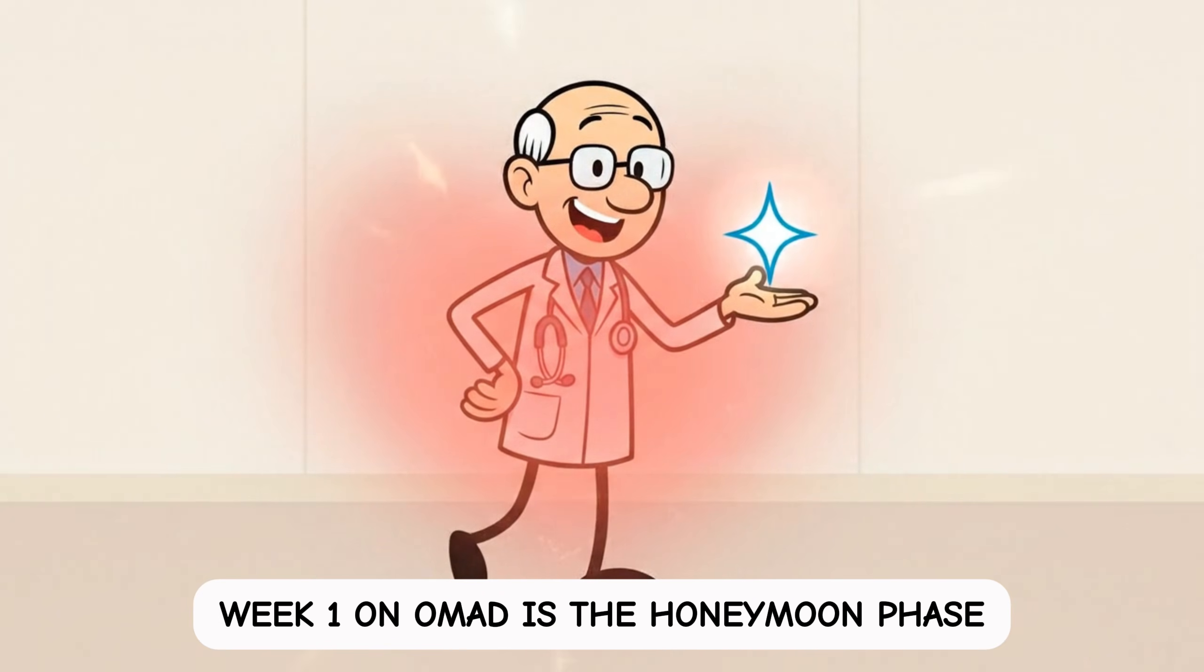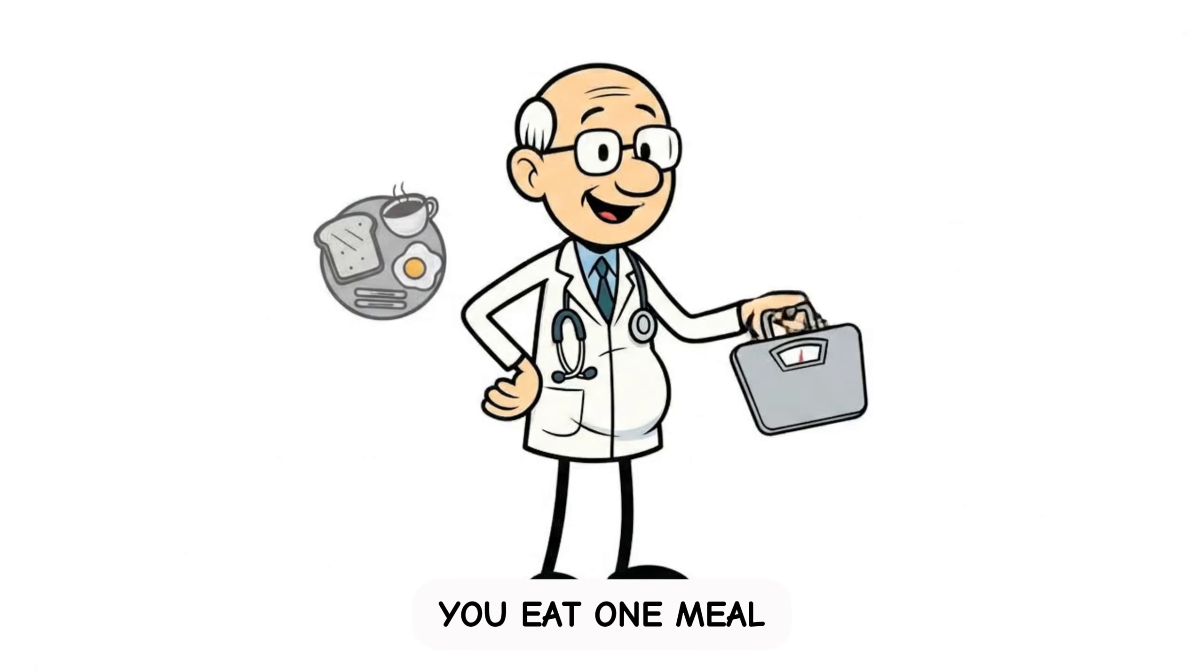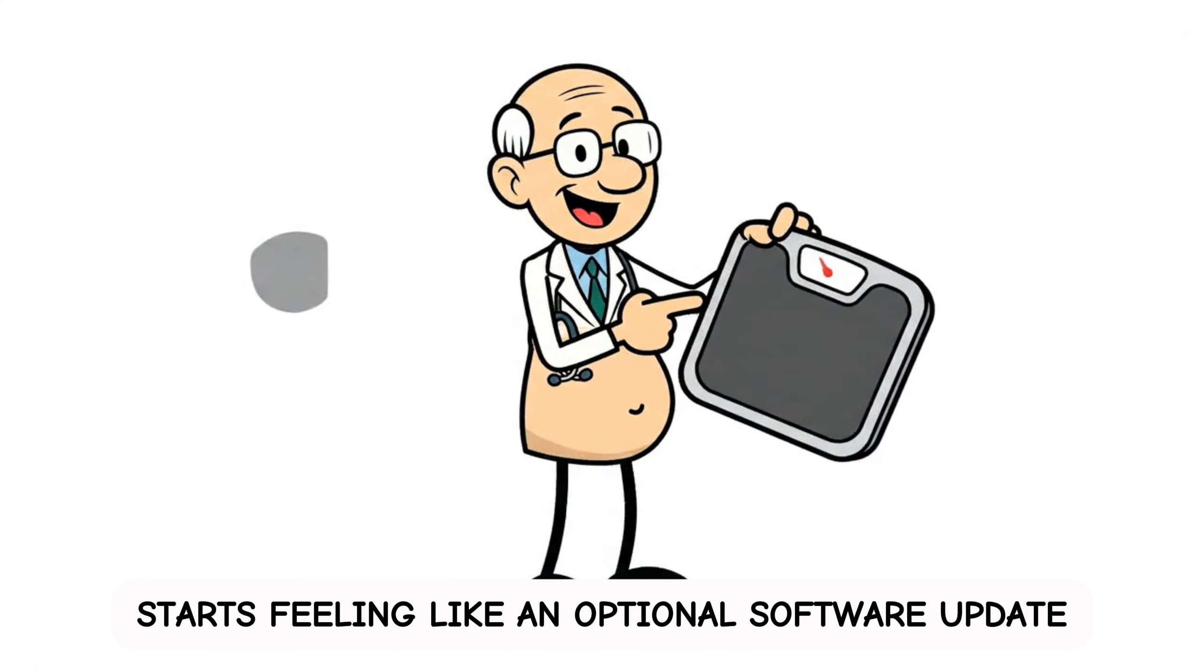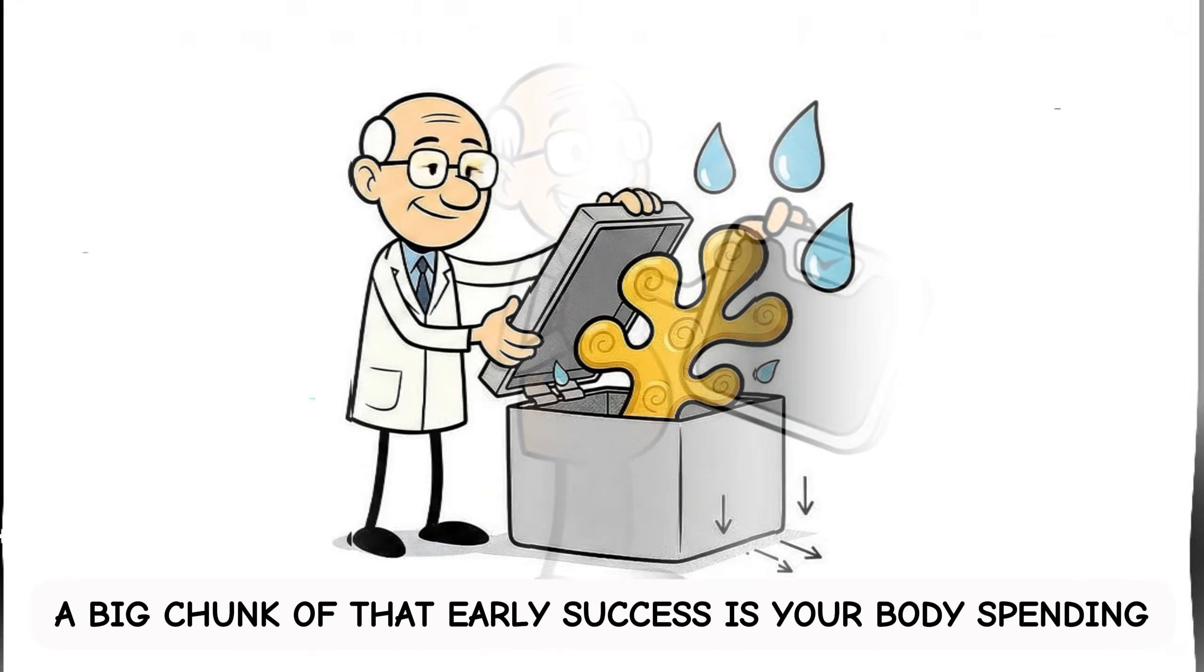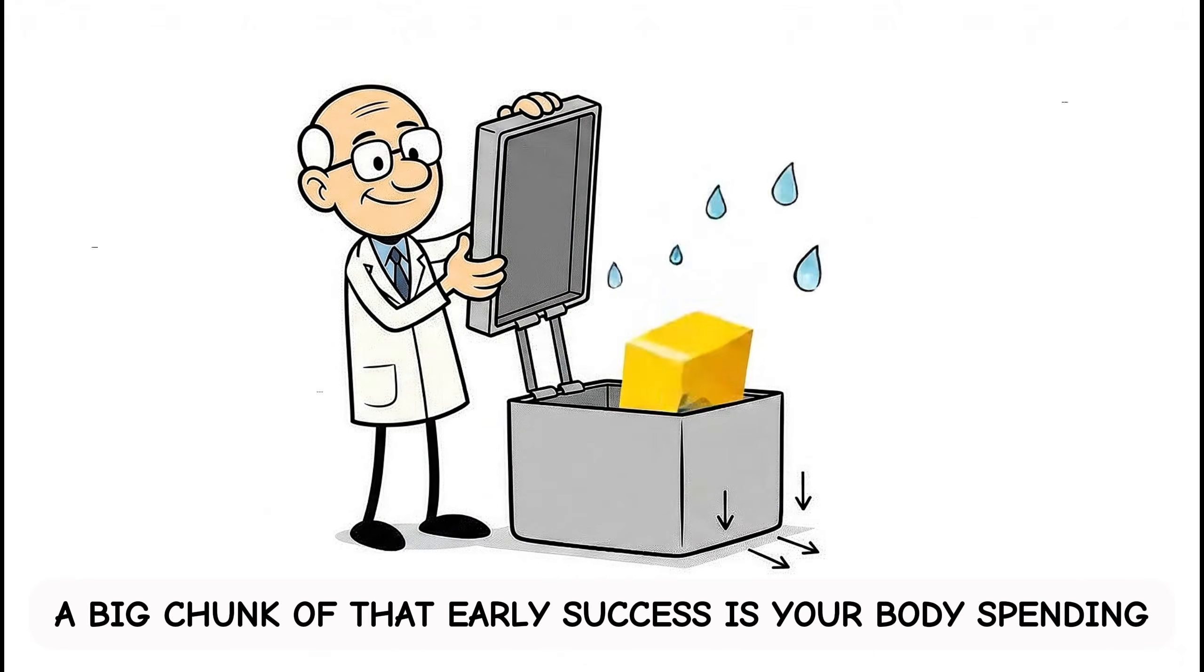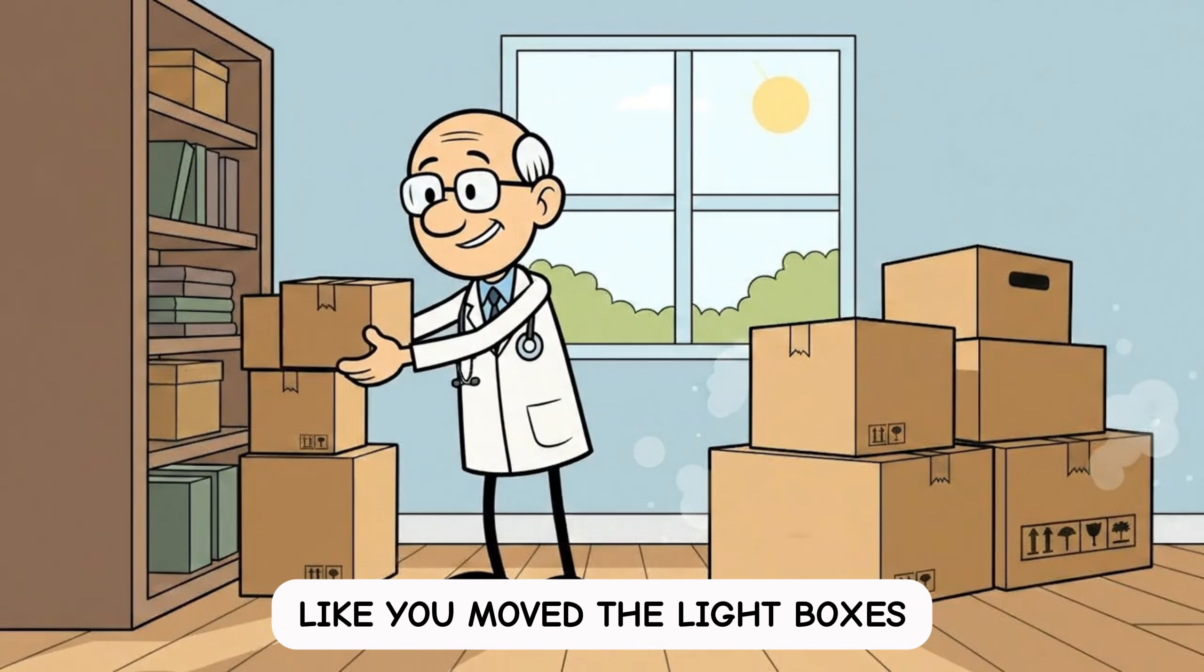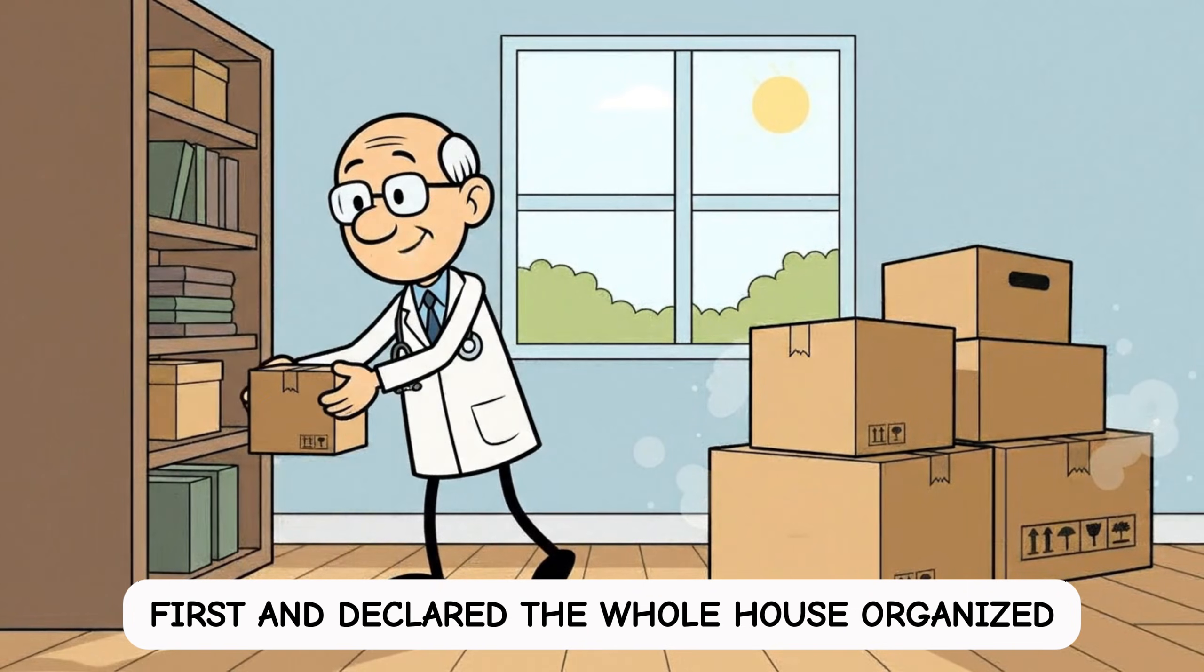Week 1 on OMAD is the honeymoon phase. You eat one meal, the scale drops, your stomach looks flatter, and breakfast starts feeling like an optional software update. A big chunk of that early success is your body spending glycogen and shedding the water that comes with it, like you moved the light boxes first and declared the whole house organized.